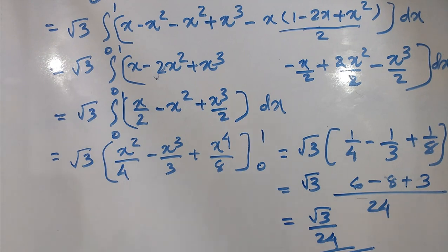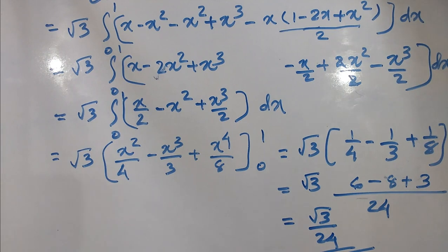The final answer is root 3 divided by 24. That is the region of integration with the 10 boundaries in x and y, with the limit z equal to f of x, y equal to 1 minus x minus y.